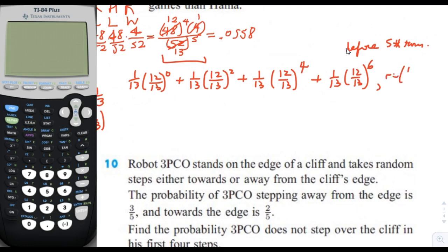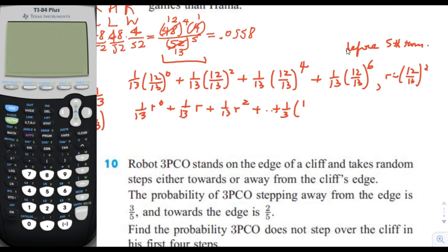Replacing (12/13)^2 with r, the series becomes: (1/13)r^0 + (1/13)r^1 + (1/13)r^2 and so on, up to r to the third for four terms. This represents the probability she wins before the fifth turn.